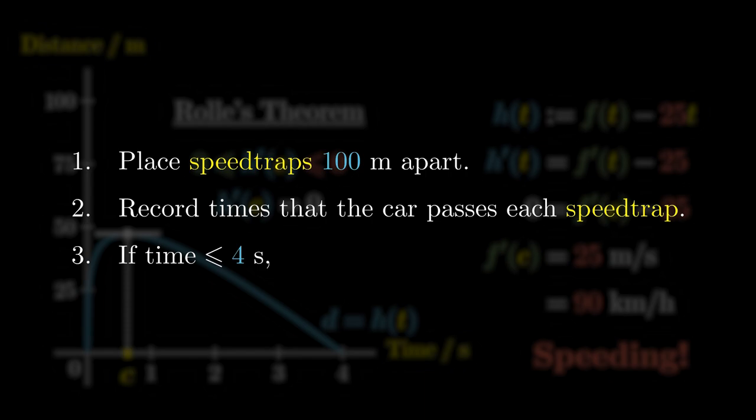If the car passes through the speed traps in four seconds or less, this tells us that there is a point at which the car is traveling at at least 90 kilometers per hour. And therefore, the car must be speeding.